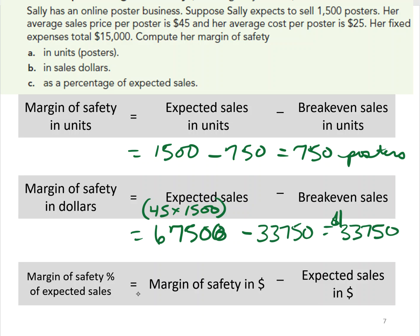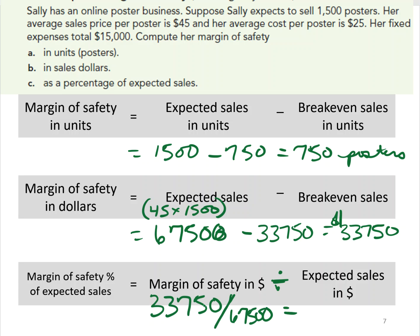Now we can compute the margin of safety as a percentage of expected sales. We take the margin of safety in dollars, $33,750, divided by expected sales of $67,500. That gives us 50%. So there's a 50% cushion — they could lose 50% of their sales and still break even, which is pretty nice.